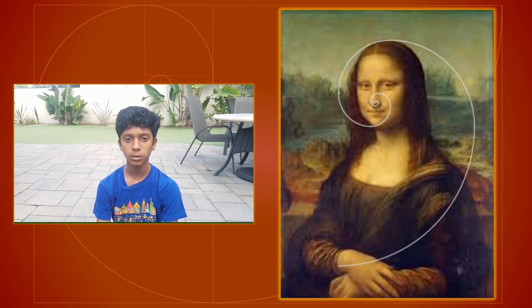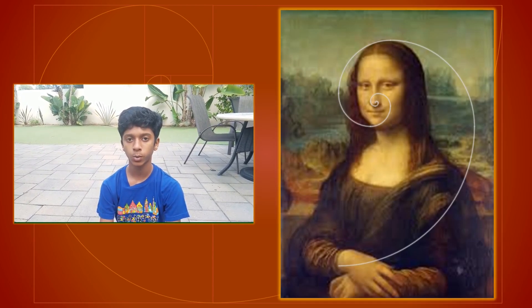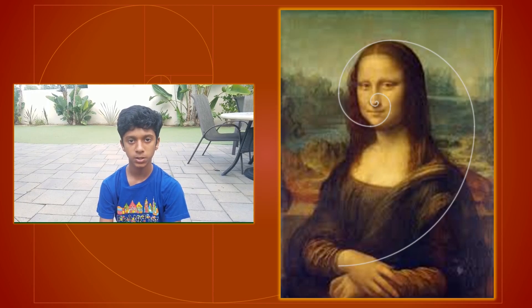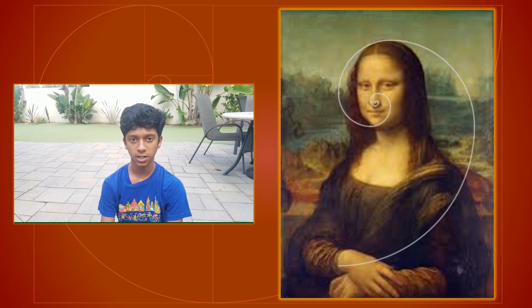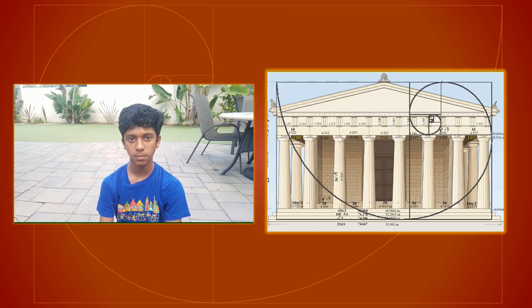In the Mona Lisa, the spiral follows the golden ratio of approximately 1 to 1.6 to make it look more natural. Even in great architecture like the Parthenon, you can see the measurements follow this.